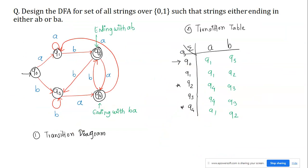The transition table is built with states q0 through q4 as rows and 'a', 'b' as columns: q0 with 'a' → q1, q0 with 'b' → q3; q1 with 'a' → q1, q1 with 'b' → q2; q2 with 'a' → q4, q2 with 'b' → q3; q3 with 'a' → q4, q3 with 'b' → q3; q4 with 'a' → q1, q4 with 'b' → q2.